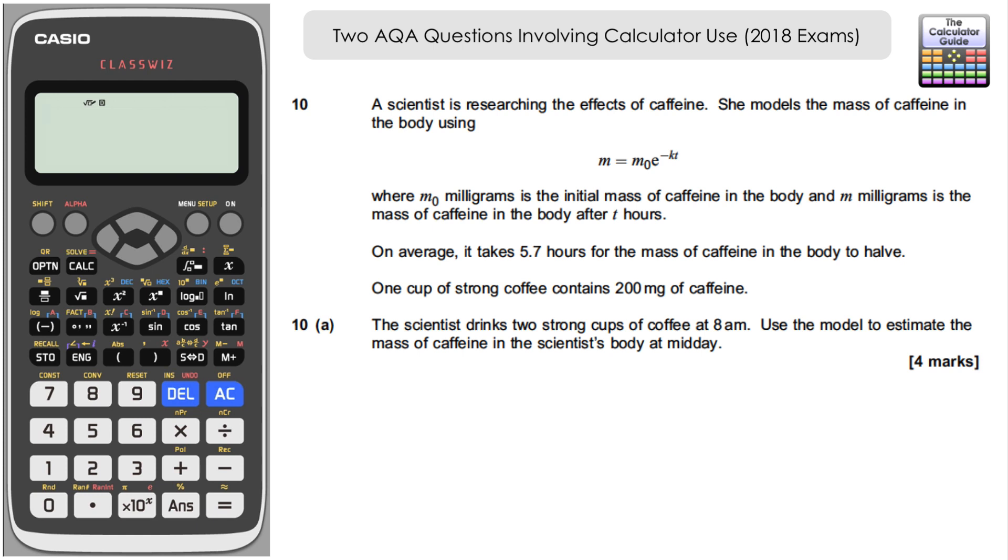What we know is that on average it takes 5.7 hours for the mass of caffeine in the body to halve. One cup of strong coffee contains 200 milligrams. So if we base it roughly around what this scientist is doing, drinking two strong cups of coffee, we know that would contain 400 milligrams of caffeine. So our m₀ is going to be 400, and we're interested in if we have the time as 5.7, we know the body will halve the amount of caffeine in 5.7 hours. So therefore our m will be 200, half of that 400. We can input those figures into the calculator. After 5.7 hours we're going to have 200 milligrams. We're going to set that up with equals, so alpha and equals. Then the starting amount was 400 milligrams, and then it's e^(-A×5.7).